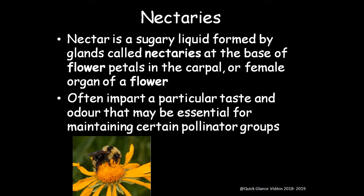Nectaries: the sugary liquid found in glands called nectaries at the base of the flower petals, in the carpel or female organ of the flower. They impart a particular taste and odor essential for maintaining certain pollinator groups. The nectaries consist of liquid with fragrance, odor, and taste, which attract pollinators like bees. The bees act as pollinators — when they come, attracted by the nectaries, they help in pollination and transfer of pollen to the gynoecium.